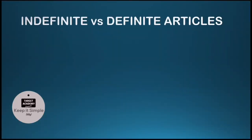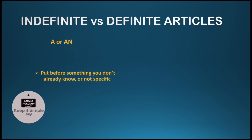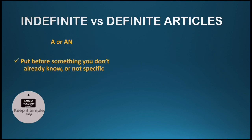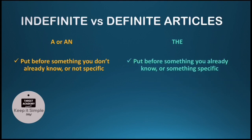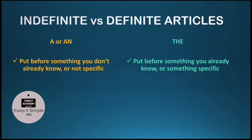Indefinite versus definite articles. A and AN are indefinite articles — these are put before something you don't already know, or something which is not specific. The is the exact opposite — it is a definite article, put before something that the speaker, listener, writer, or reader already knows about, or something specific.